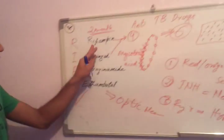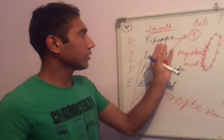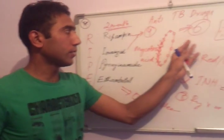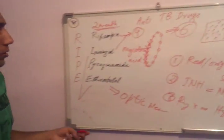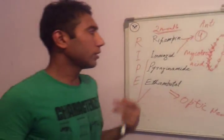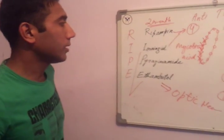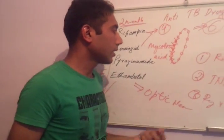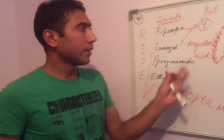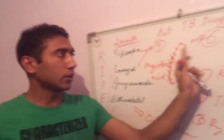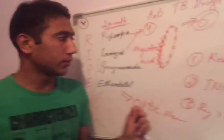All four drugs are hepatotoxic. Because these drugs are used for six to nine months for the treatment of tuberculosis, which can be pulmonary, cervical, vertebral column, meningeal, or involve organs like the spleen and liver, treatment lasts at least six months and up to nine or twelve months.